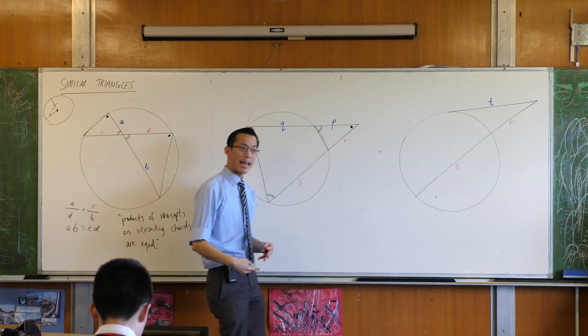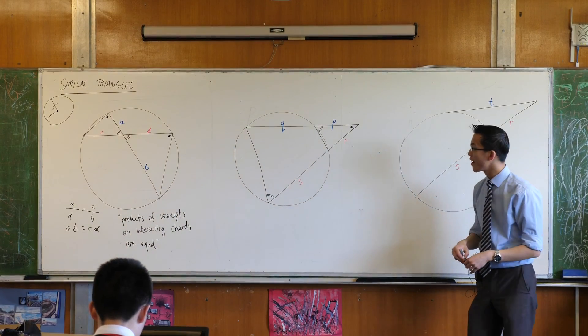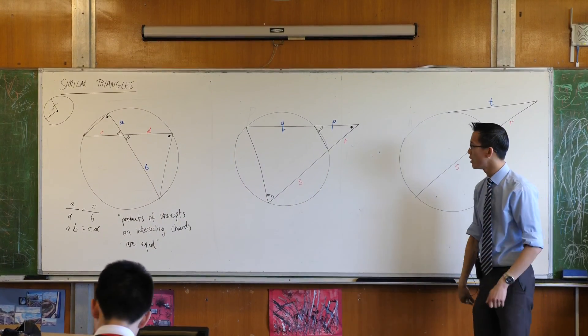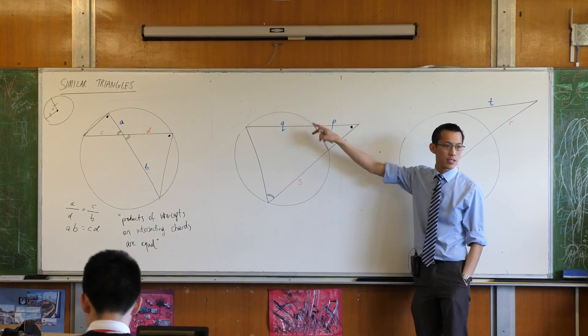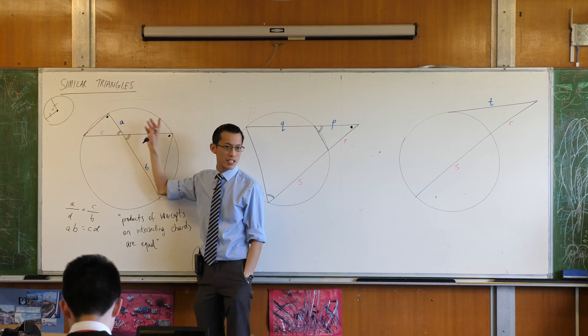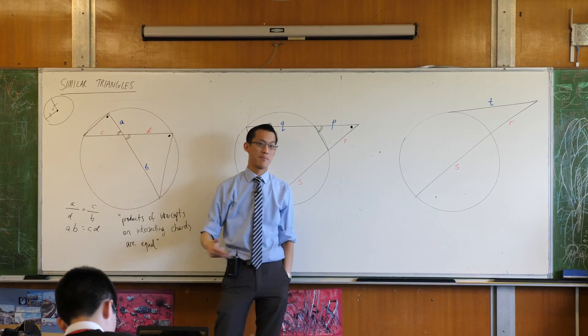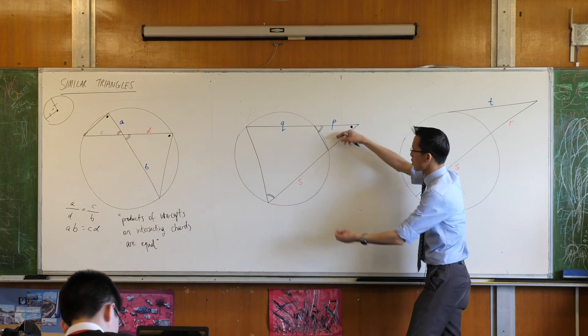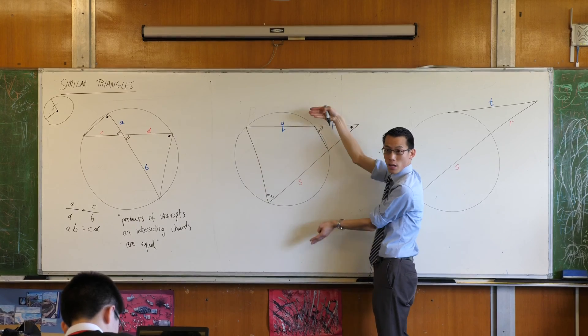So again we've got our pair of similar triangles but do watch out because they're not facing the same direction. Do you notice that? These ones are really nice. It's like A goes with D because they're both at the top, C goes with B because they're both at the bottom, but this one you can see they're flipped over on each other. Does that make sense?